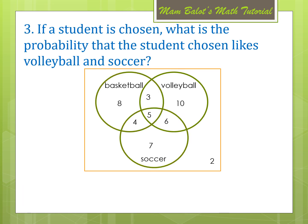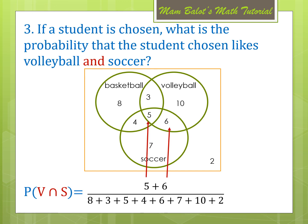Example 3: if a student is chosen, what is the probability that the student likes volleyball and soccer? Since we use the word AND, we are referring to the intersection of sets. We find the probability of V intersection S — the numbers inside the intersection of the volleyball and soccer circles, which are 5 and 6. That would be 11 over 45.